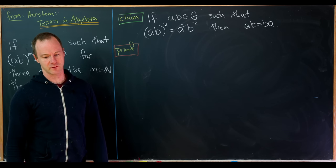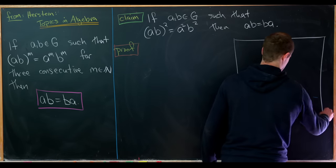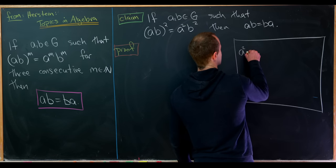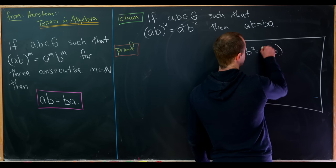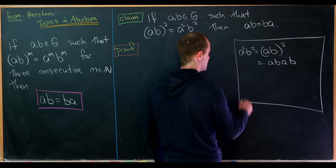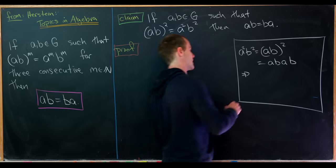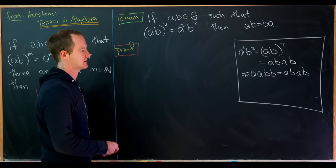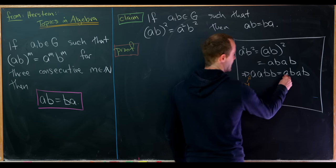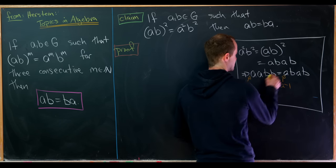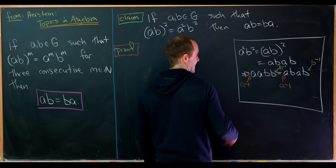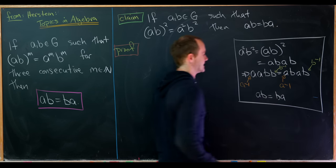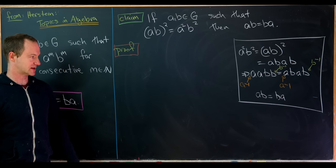Let's jot down what's going on here. Expanding the left-hand side: a²b² equals (ab)² means a times a times b times b equals a times b times a times b. Now we can left-multiply both sides by a-inverse and right-multiply both sides by b-inverse. That cancels the a and a-inverse on the left, and the b and b-inverse on the right, leaving us with ab equals ba.